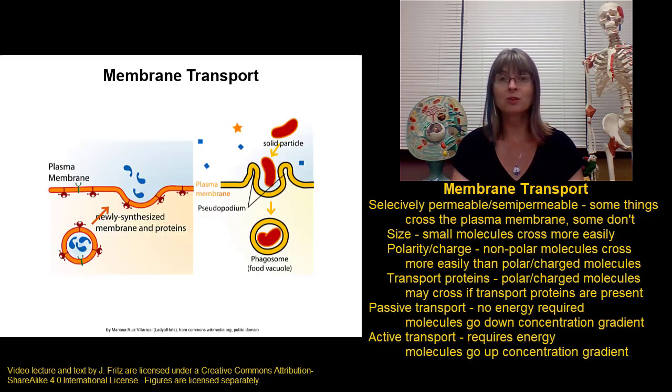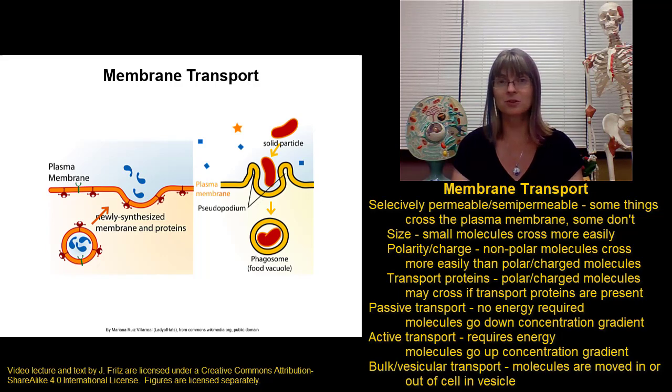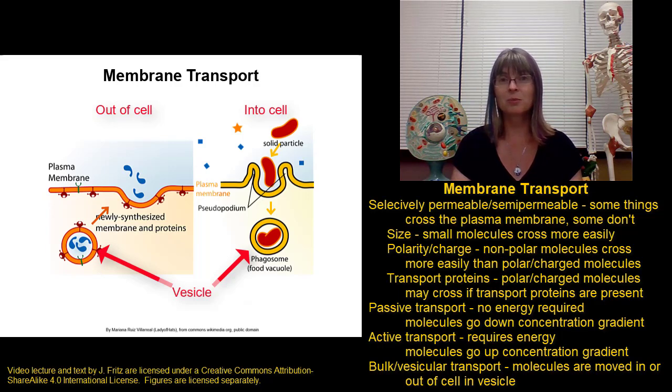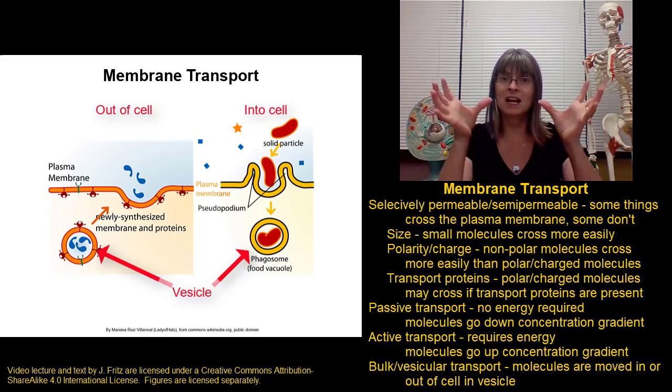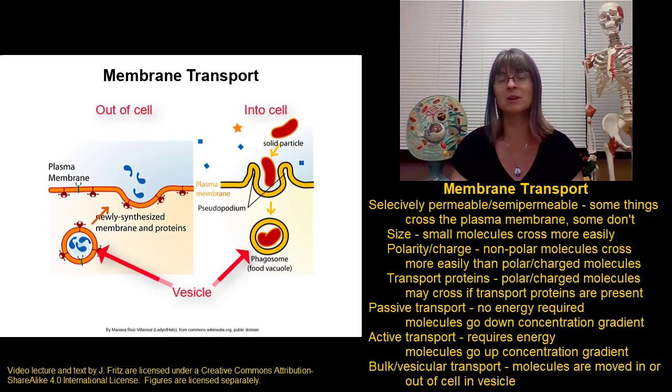The third type of transport is bulk transport or vesicular transport. In this, we're not worried about whether we're moving up or down a concentration gradient. Instead, we're moving molecules in or out of a cell in a vesicle. This is good for transporting large molecules or large amounts of molecules because you can get large things or a lot of things in and out of a cell easily if you package them in a vesicle.